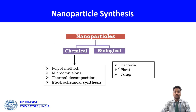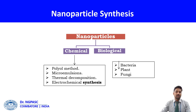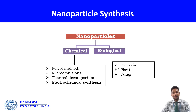For nanoparticle synthesis, nanoparticles are synthesized or naturally produced. We can adopt either a chemical method or a biological method. For chemical methods, we can follow the polyol method, microemulsions, thermal decomposition, or electrochemical synthesis. For biological methods, we can use bacteria, bacterial extracts, bacterial metabolites, plant metabolites, fungal metabolites, or any biomass produced by biological matter for the biological synthesis of nanoparticles.